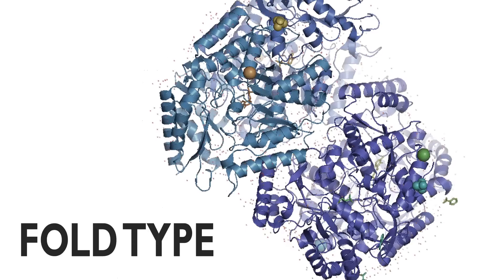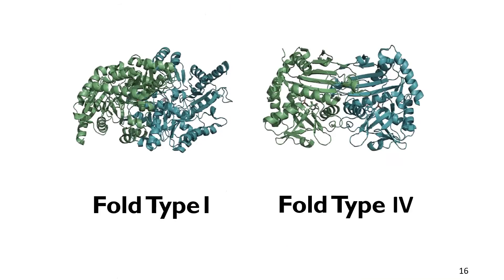One thing that differs is the fold type. PLP-dependent enzymes can have seven different fold types, and two of them can be assigned to transaminases: fold type 1 and fold type 4. These two fold types are homodimers, possessing two subunits, subunit A and subunit B. On the interface of these two subunits we find our active site. In some cases transaminases have two of these homodimers, possessing two active sites each containing one PLP.